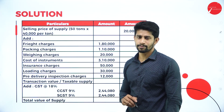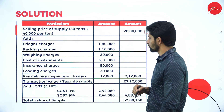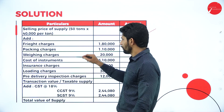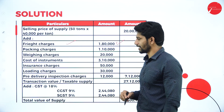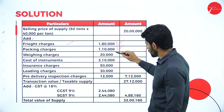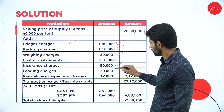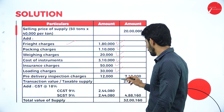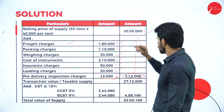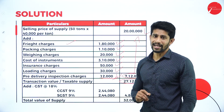Selling price of supply: 50 tons × Rs. 40,000 per ton = Rs. 20 lakhs. Add freight charges Rs. 1,80,000, packing charges Rs. 1,20,000, weighing charges Rs. 20,000, cost of instruments Rs. 3,10,000, insurance Rs. 50,000, loading charges Rs. 30,000, and pre-delivery inspection charges Rs. 12,000. The total of all inner column expenses is Rs. 7,12,000. Adding Rs. 7,12,000 to Rs. 20 lakhs gives Rs. 27,12,000, which is the transaction value or taxable supply.